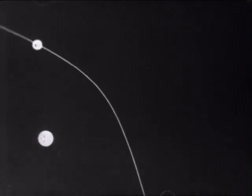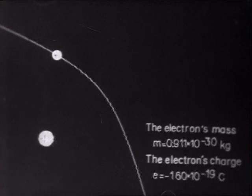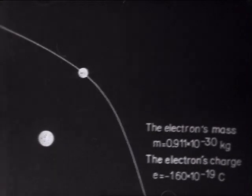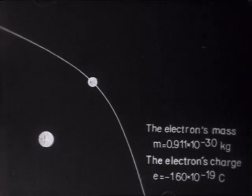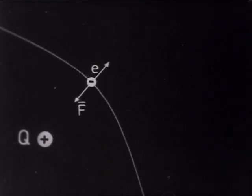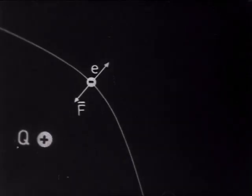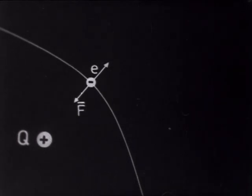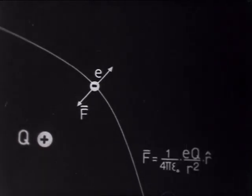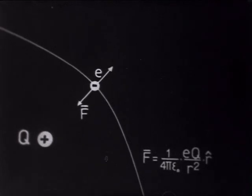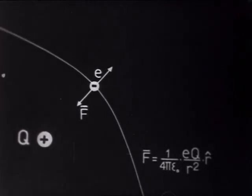In the following study on the motion of the electron, we shall regard it as a particle with a constant mass and charge. If the electron moves in the vicinity of another charge, it is influenced by this with a force F, according to Coulomb's law for electrical charges.